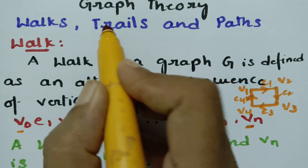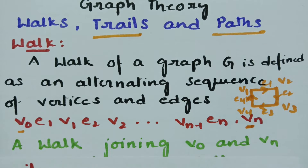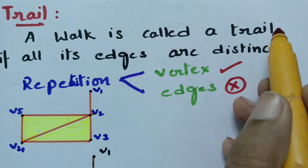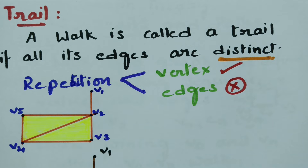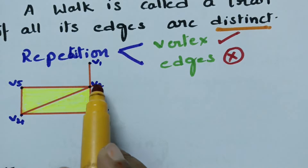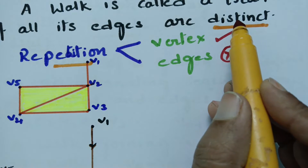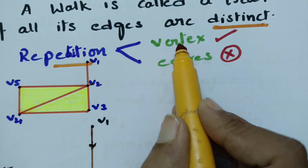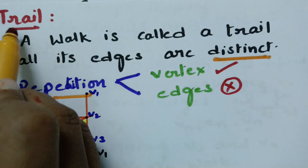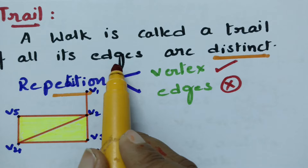A walk is of two types: trails and paths. A walk is called a trail if all its edges are distinct — different edges — and such a walk is called a trail. For example, if you take a graph with vertices V1, V2, V3, V4, and V5, the condition is that edges should be distinct, so there is no repetition of edges, whereas we can repeat the vertices in a trail.